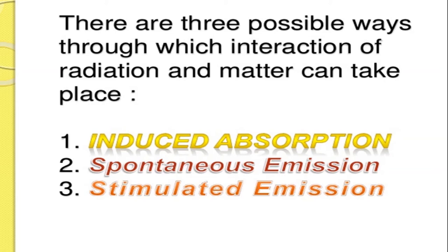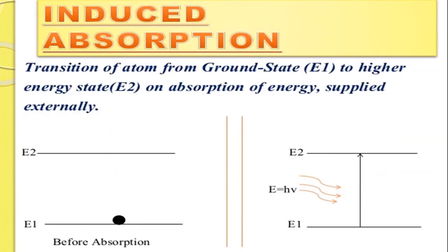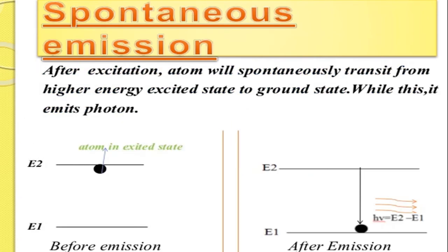First, induced absorption: the transition of an atom from the ground state to a higher energy state upon absorption of externally supplied energy. Looking at the diagram, the first one represents before absorption and the second represents after absorption or after excitation. Next, spontaneous emission: an atom will spontaneously transit from a higher energy excited state to the ground state while emitting a photon.